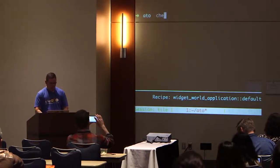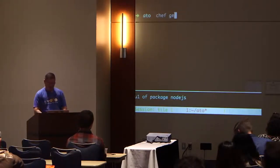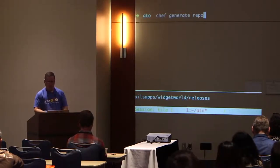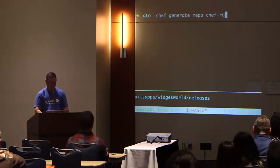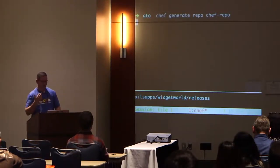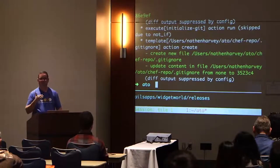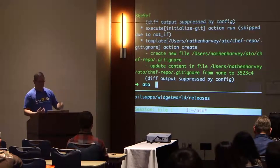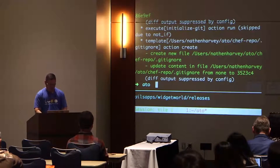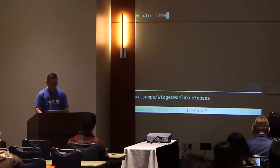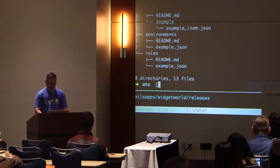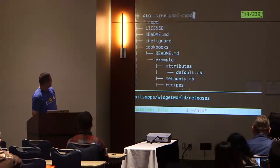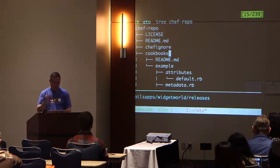The Chef command has a cool generate feature, so I'm going to run 'chef generate repo' to create a repository for all of my Chef code — I'll call it 'chef-repo.' It just used Chef to generate a directory called chef-repo, and if I look at it we can see there's a bunch of stuff — a roles directory, an environments directory, a cookbooks directory, a license — all kinds of stuff. That was just created for me.